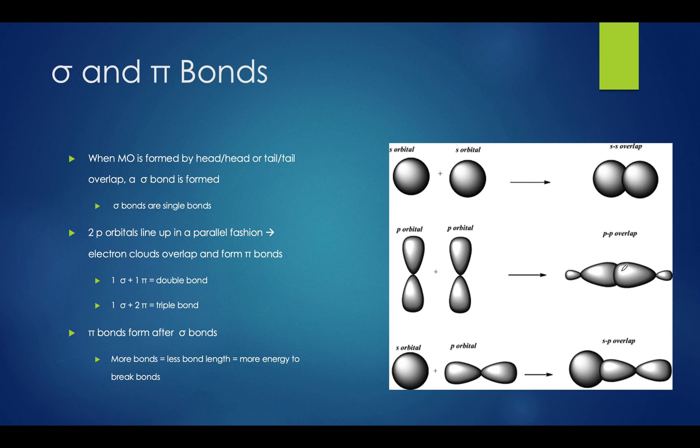Let's talk about sigma and pi bonds now. Sigma bonds are formed when a molecular orbital is formed by a head-to-head or tail-to-tail overlap. It's important to note that all sigma bonds are single bonds. Pi bonds are formed when two p orbitals line up in a parallel fashion, causing their electron clouds to overlap. You can see how it looks like in this visual right here. Another way you can see this formation of pi bonds is something like this.